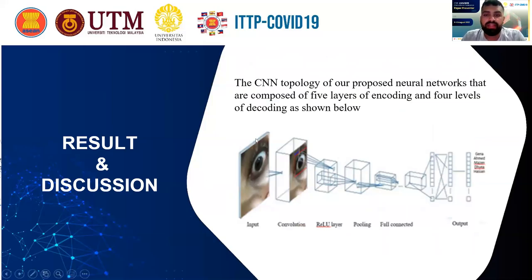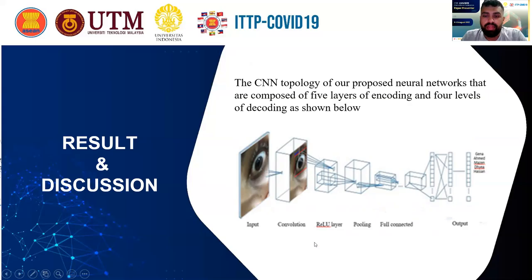Then we have the CNN topology for our proposed neural network, which is composed of five layers of encoding and four levels of decoding, as shown below. The five layers are: firstly the input, then CNN convolution, then the ReLU layers, then pooling, then the fully connected layer, and as output we get the eye ready for identification.